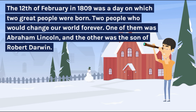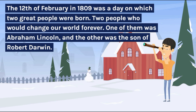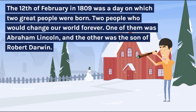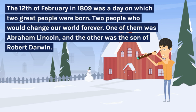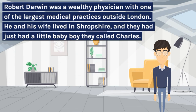The 12th of February in 1809 was a day on which two great people were born — two people who would change our world forever. One of them was Abraham Lincoln, and the other was the son of Robert Darwin. Robert Darwin was a wealthy physician with one of the largest medical practices outside London. He and his wife lived in Shropshire, and they had just had a little baby boy they called Charles.